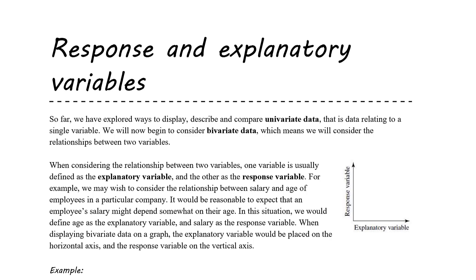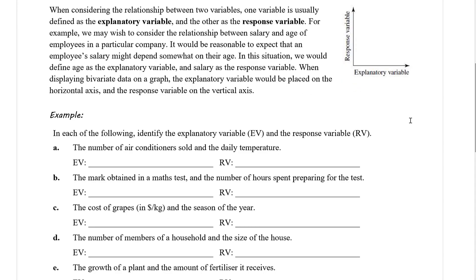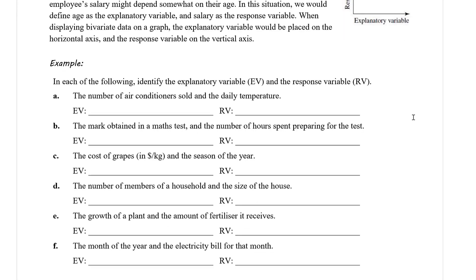Let's have a think about some variables and decide which is the explanatory variable — which we'll abbreviate to EV — and which is the response variable — which we'll abbreviate to RV. First: the number of air conditioners sold and the daily temperature.